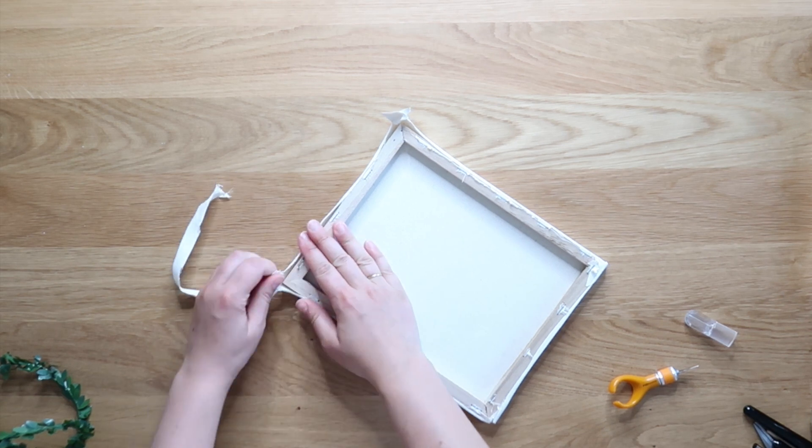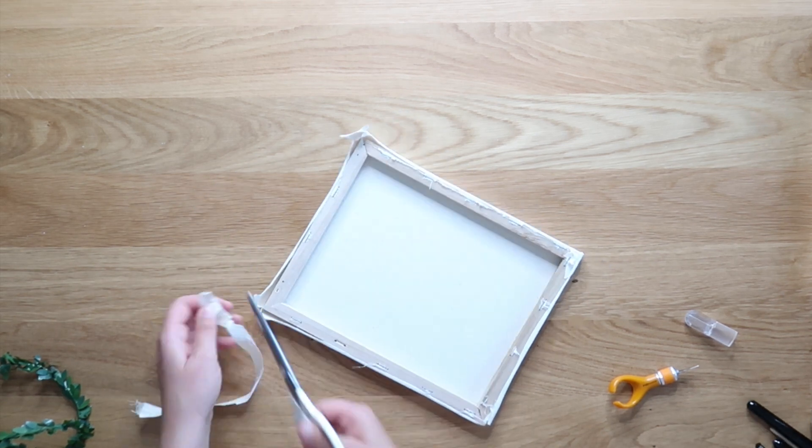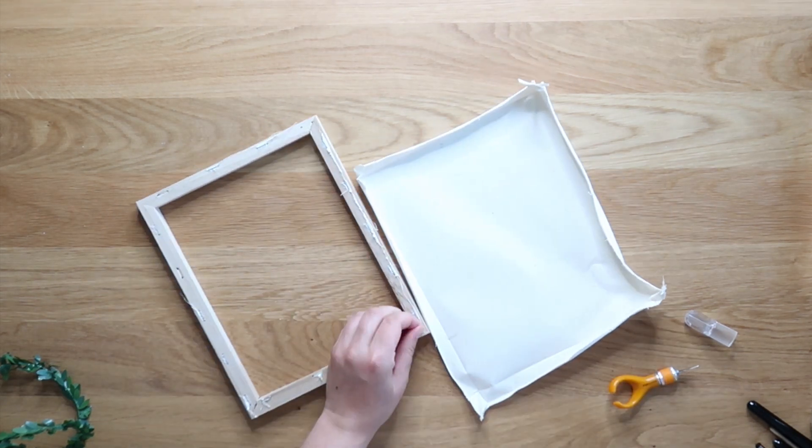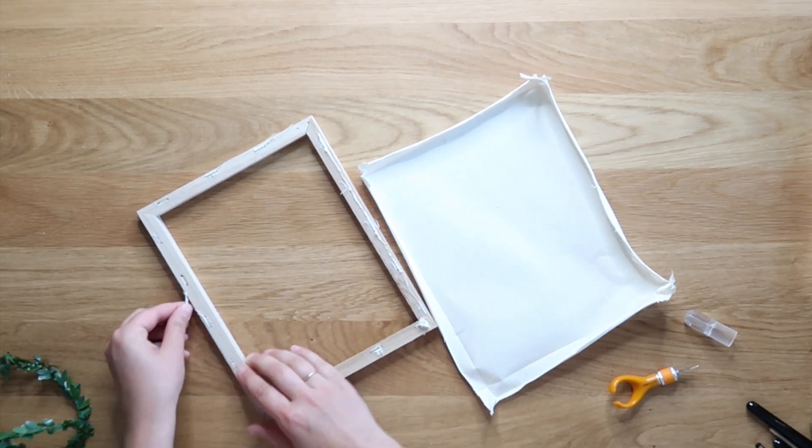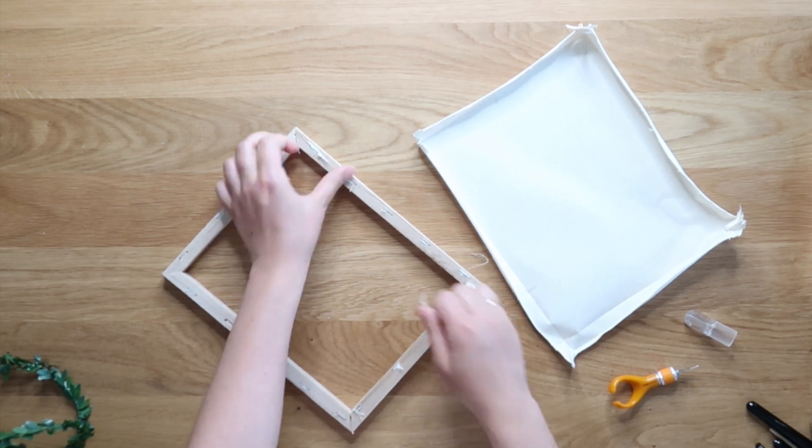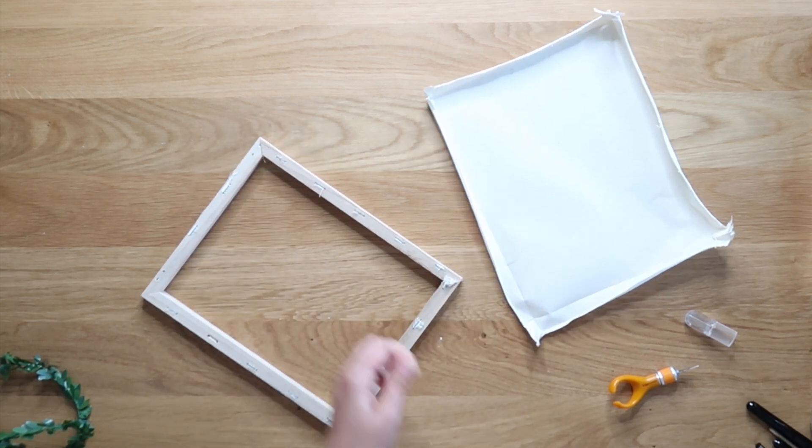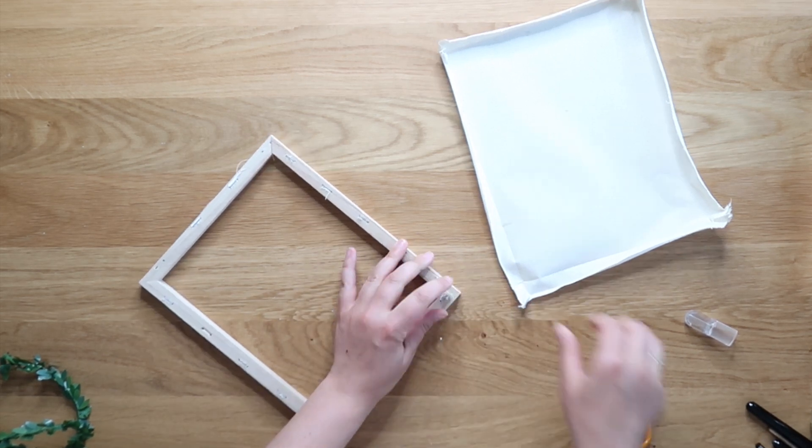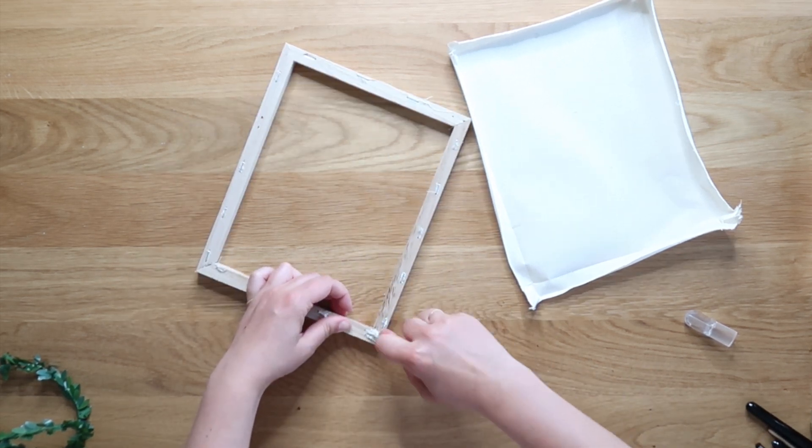I leave the staples in, unless like one is loose, then I'll rip it out. But I just leave the staples in because it's going to be the back of your project anyway. So it doesn't matter unless you really want to remove the staples. But sometimes that's tricky. So I just leave it. So we're going to remove the canvas. And unlike my other reverse canvas projects, we're going to throw away that canvas or save it for a different project.